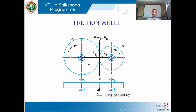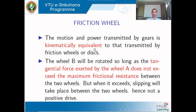As seen in the diagram, power is transmitted from one shaft to another using two wheels or discs. Disc A rotates clockwise and disc B rotates anticlockwise. There is a normal reaction Rn, a tangential force, and a frictional force equal to mu times the normal reaction. The motion and power transmitted by a gear is kinematically equivalent to that transmitted by these friction discs.